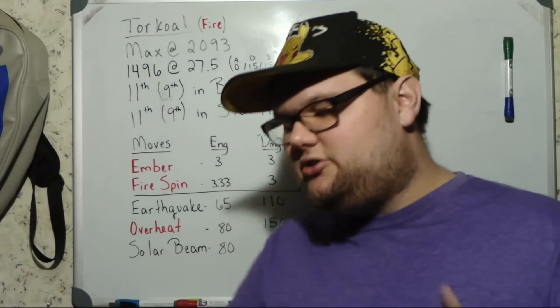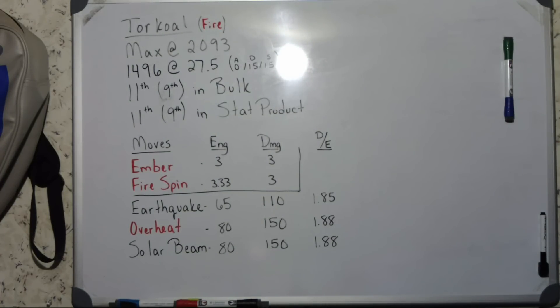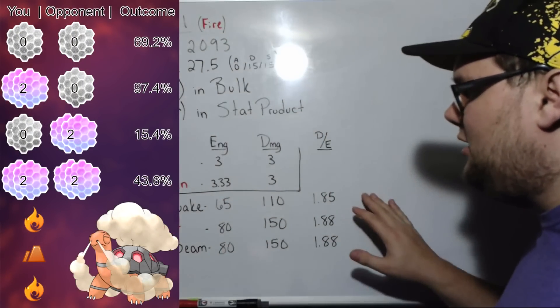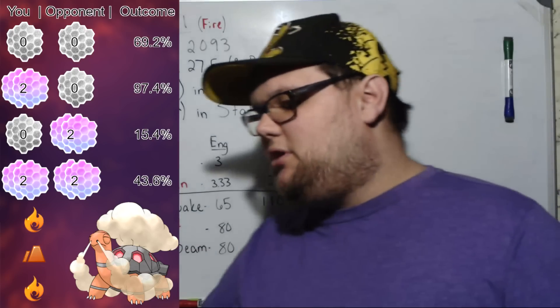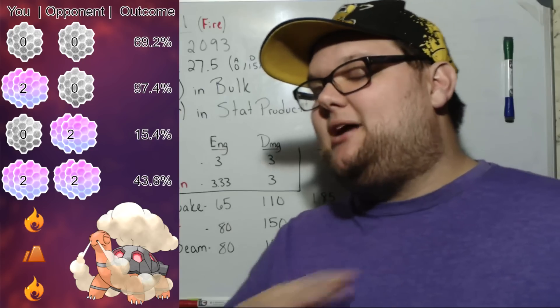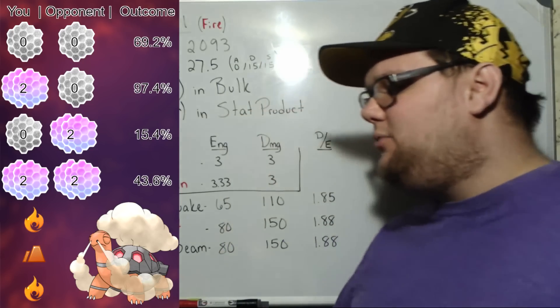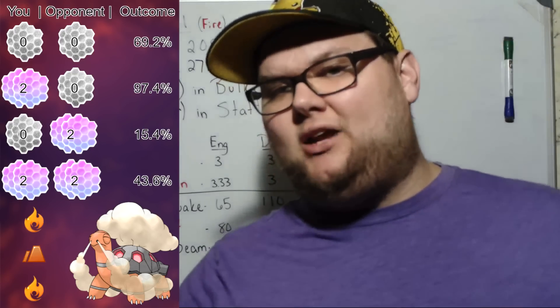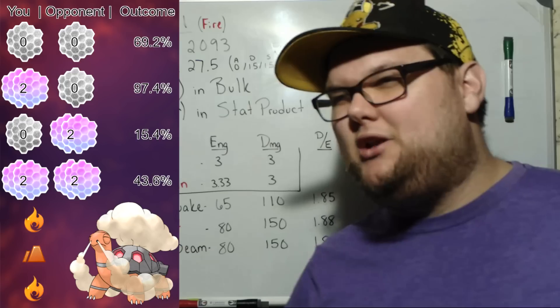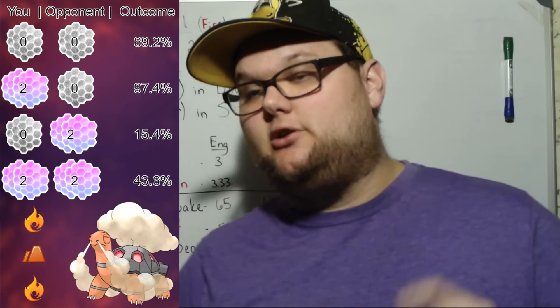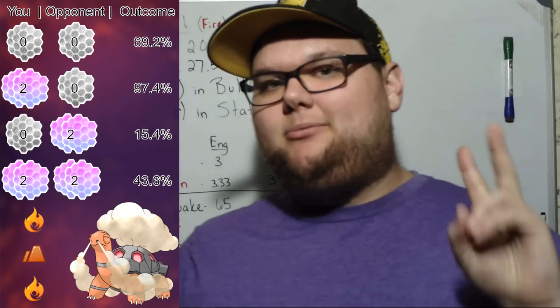Let's go over these shield numbers really fast. First moveset is the preferred moveset for me: Fire Spin, Earthquake, and Overheat. Zero versus zero shields, in the scenario where we are the closing Pokemon with no shields remaining, we actually win 69.2% of those matchups. Whenever I have two shields and my opponent has two shields, we actually end up winning 97.4% of those matchups. The only two Pokemon that we end up losing to in that scenario is Altaria and Kingdra.